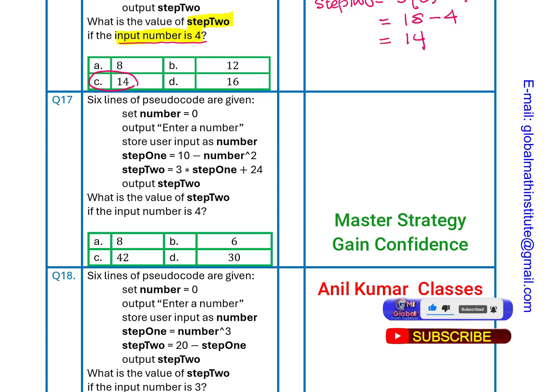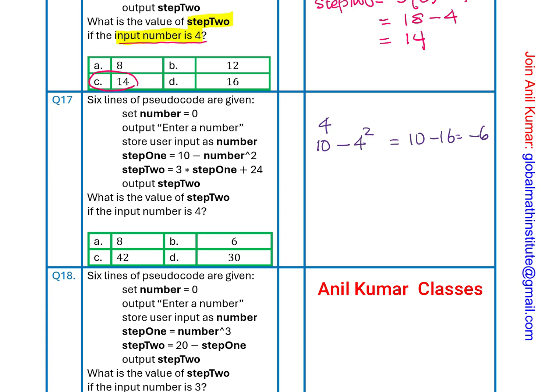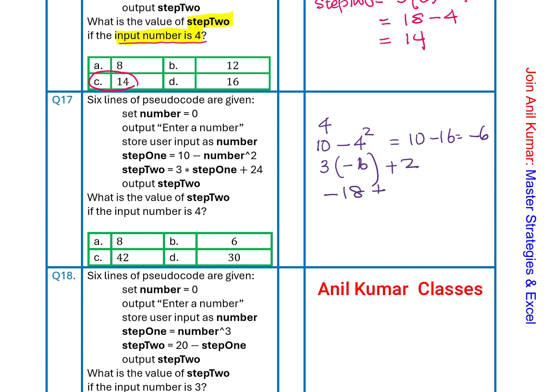When number 4 is entered, it is stored in 'number'. Step 1 equals 10 minus 4 squared: that is 10 minus 16, which equals negative 6. In Step 1 we now have negative 6. Step 2 equals 3 times negative 6, plus 24: that is negative 18 plus 24.